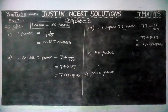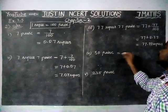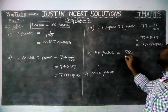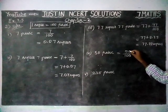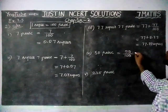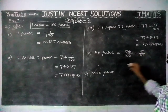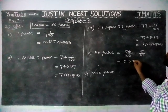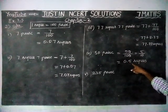And fourth question: 50 paise is equal to — we are going to divide it by 100. So, 50 divided by 100. We can cancel one zero from each, leaving 5 by 10. Here we have only one zero, so that can be written as 0.5 rupees.